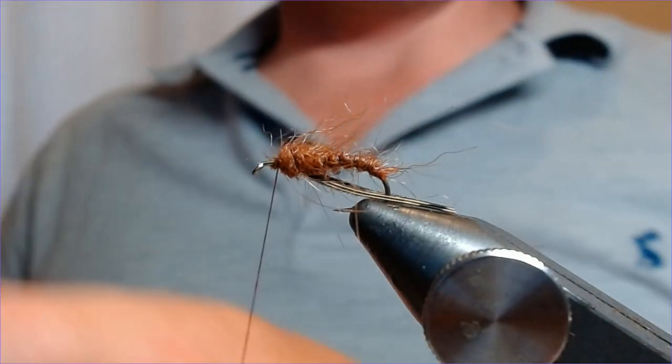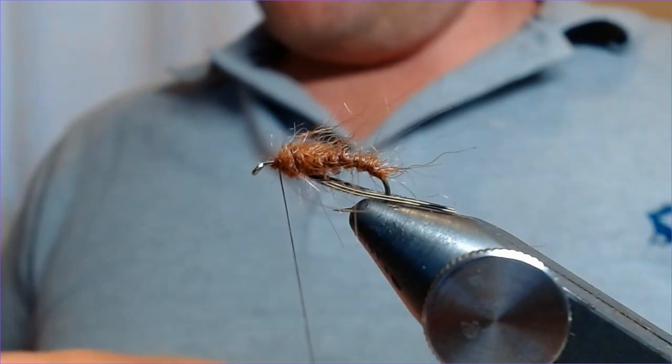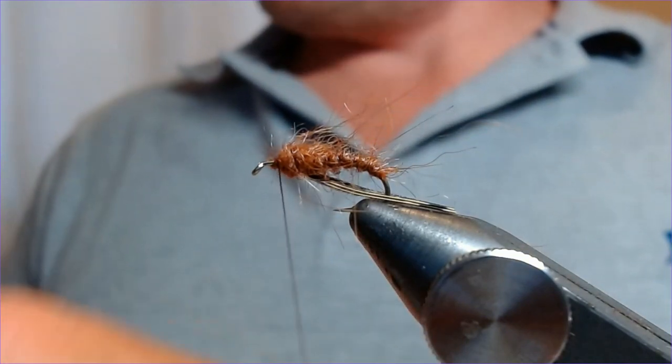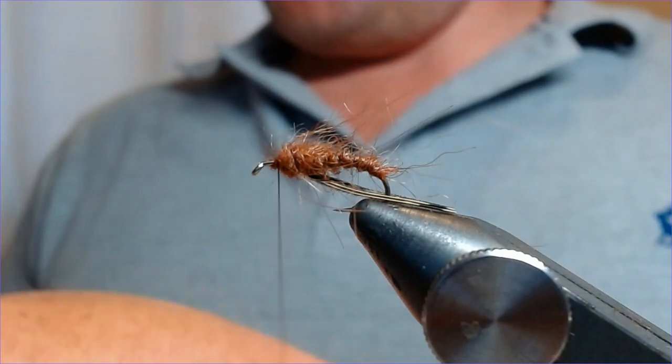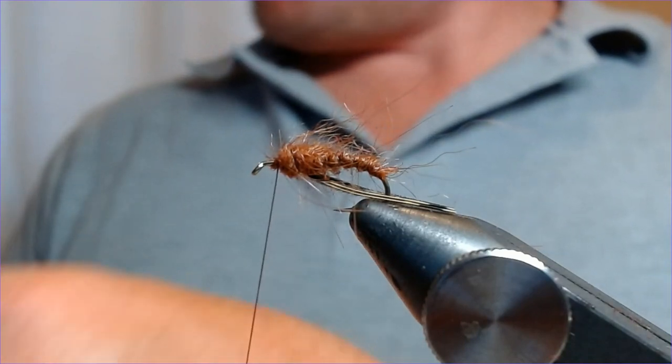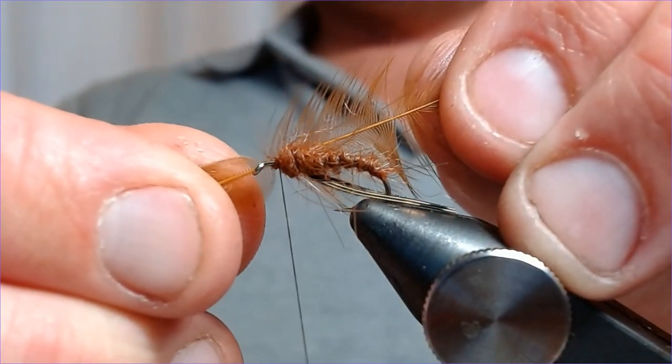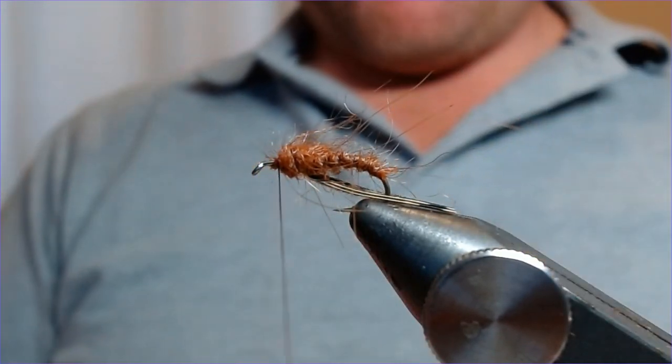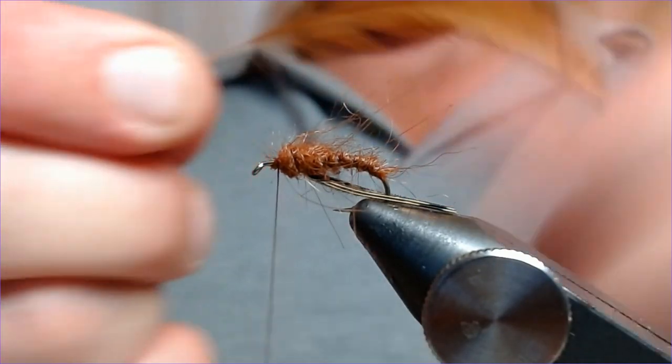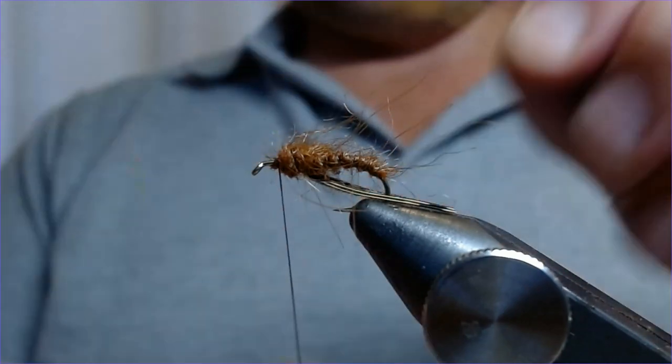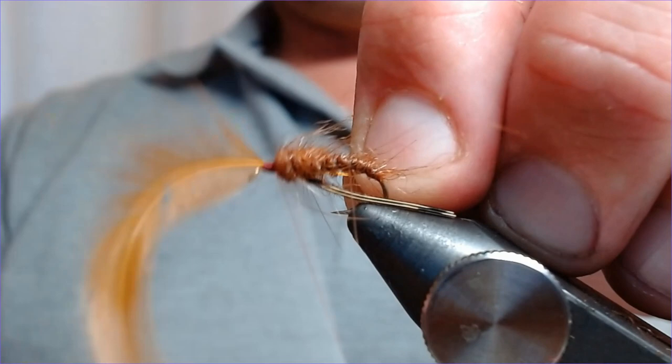Now we're actually going to put a bit of a hackle on this fly. This is going to be cock or hen, it doesn't really matter. Again, this is just a brown to match the pattern. So I'm going to select a reasonable size feather out of that. It won't be huge but it won't be able to see the sort of sizes if you were tying a hopper. Just strip that back so you get to the usable part, catch in that thread forward, just catch in there and on the thread backwards.